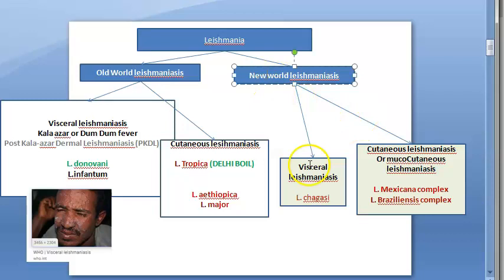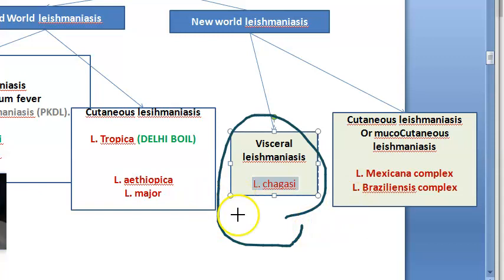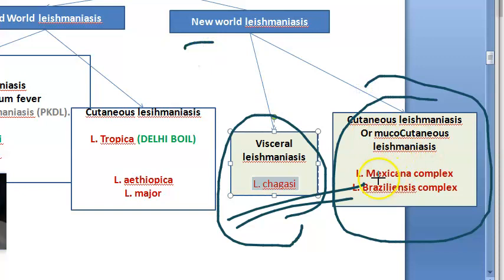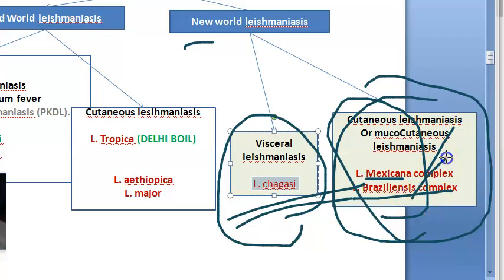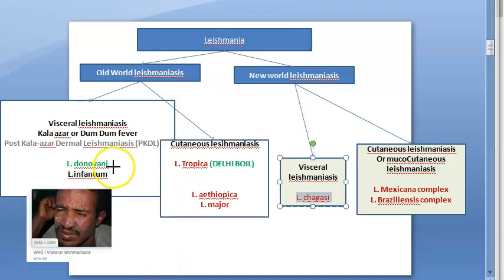New World leishmaniasis is again divided into visceral and cutaneous. Visceral leishmaniasis in the New World is caused by Leishmania chagasi, and cutaneous leishmaniasis in the New World is caused by Leishmania mexicana and Leishmania braziliensis. The names themselves suggest South America. For the Old World: Leishmania donovani causes visceral, Leishmania tropica causes cutaneous (Delhi boil).